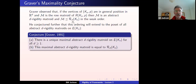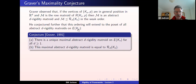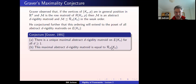Graver also gave examples of abstract rigidity matroids not constructed this way, but he looked at this order and conjectured it extends to the whole poset of all abstract d-rigidity matroids on the edge set of K_N. In general, a poset can have many maximal elements. Graver made the amazingly insightful conjecture that this particular poset would have a unique maximal element — and more than that, conjectured the maximum element would be the d-dimensional generic rigidity matroid.